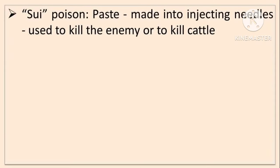It is also called as Sui Poison. Sui means needle. A needle is prepared from the crushed seed mixed with opium, onion, dhatura, arsenic, etc., and made into needles. The needles are dried and used to kill enemies or cattle. So it is also called as Cattle Poison. The Sui is prepared from Abrus precatorius.